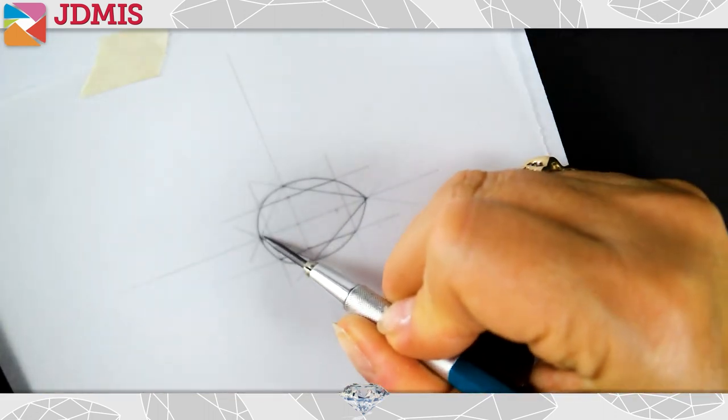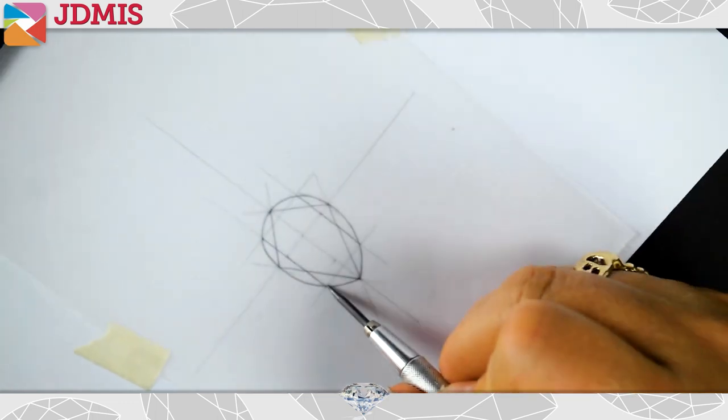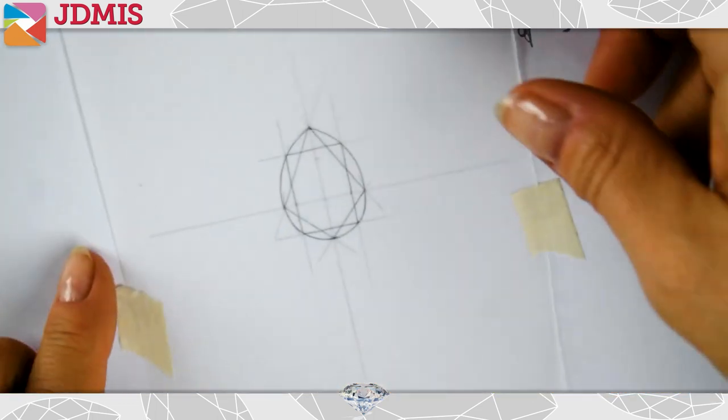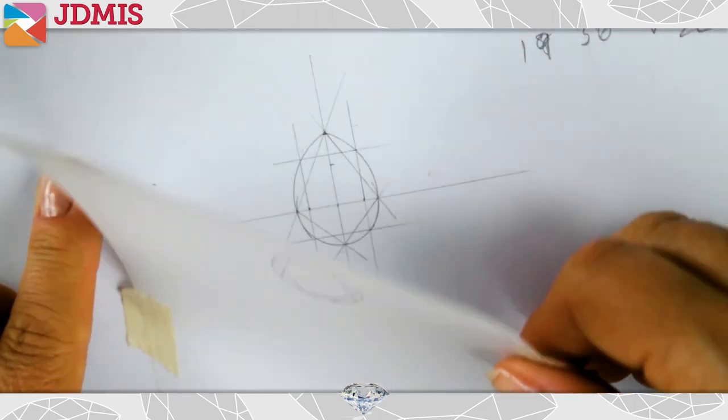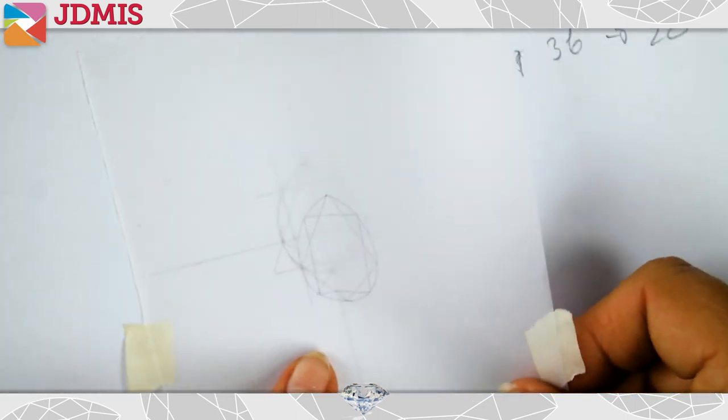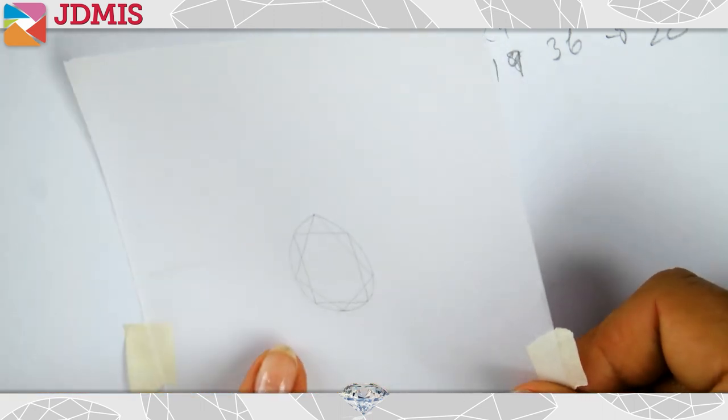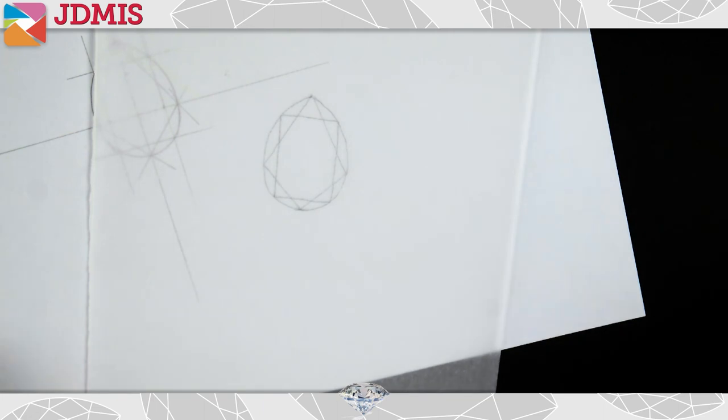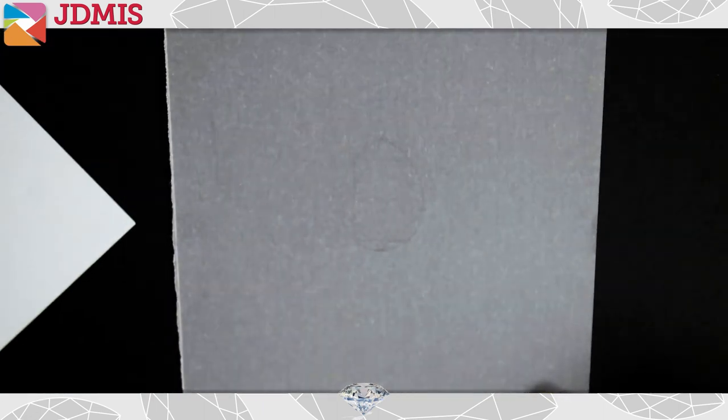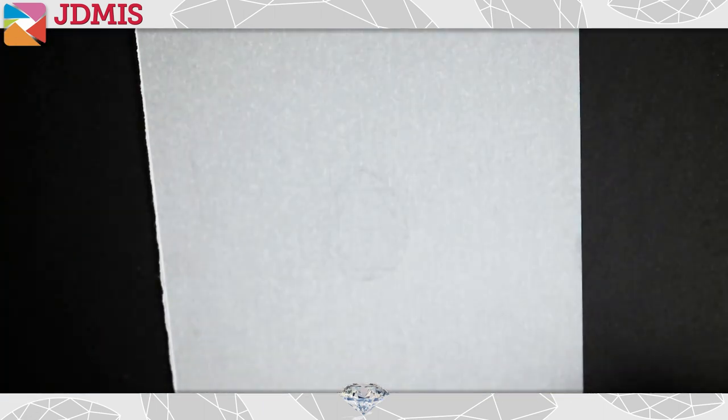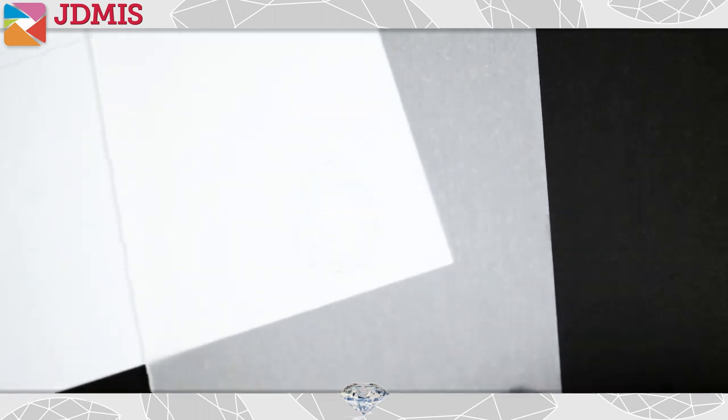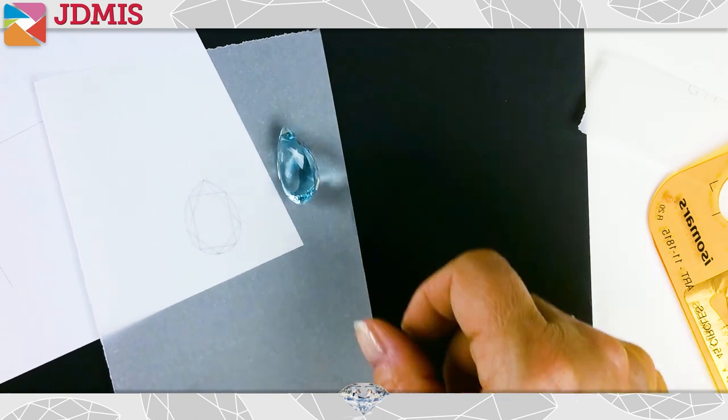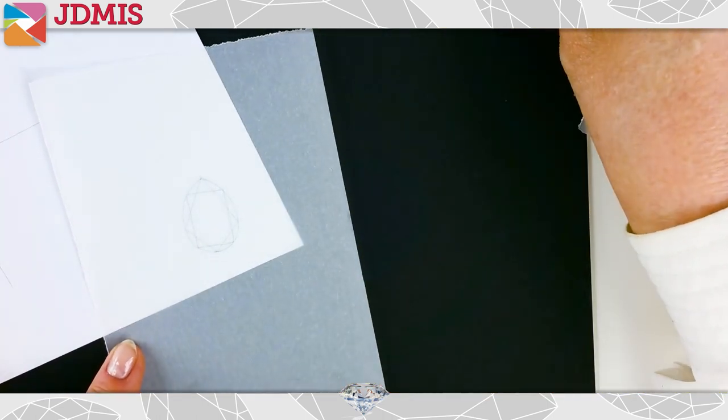Once we have all of our facets in place, now the next thing to do is going to be to start coloring. But most importantly, we want to color on the opposite side to where you have drawn. Otherwise, you're going to get smudging between your white pencil and your 2H pencil. To be able to see this drawing, we need to work with a white piece of paper behind. And, of course, the coloring will have to be done on the black background.